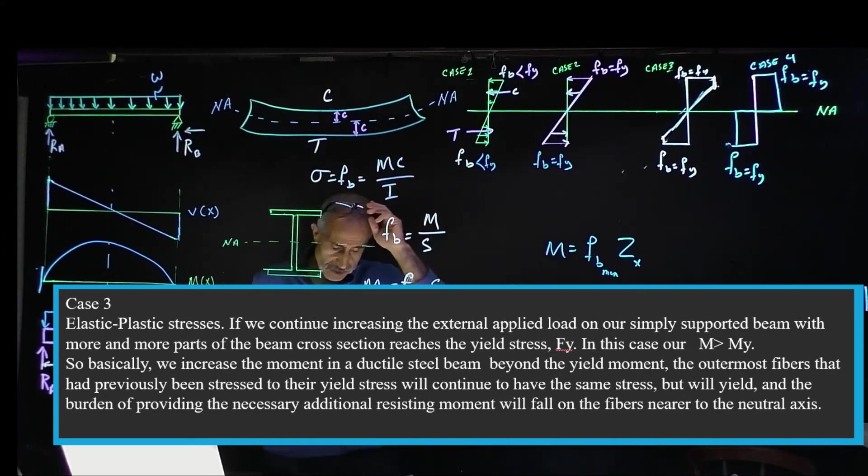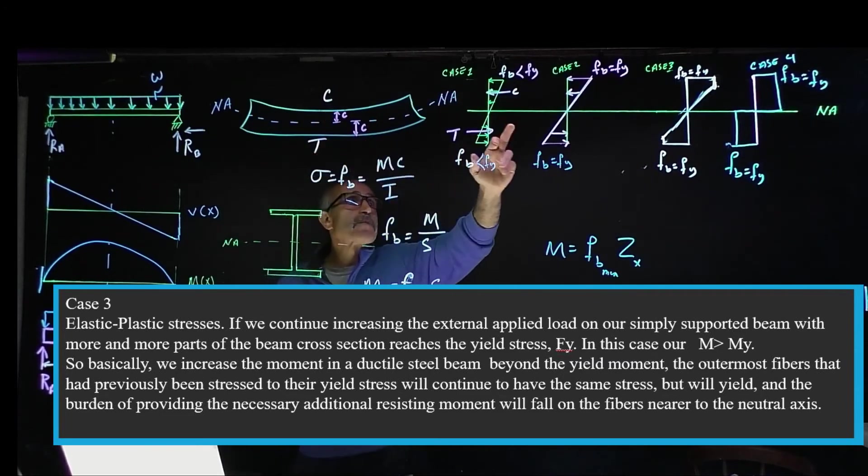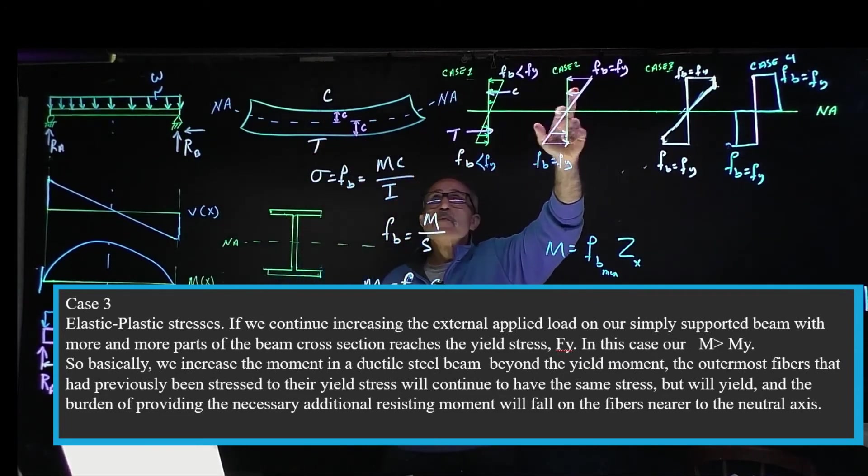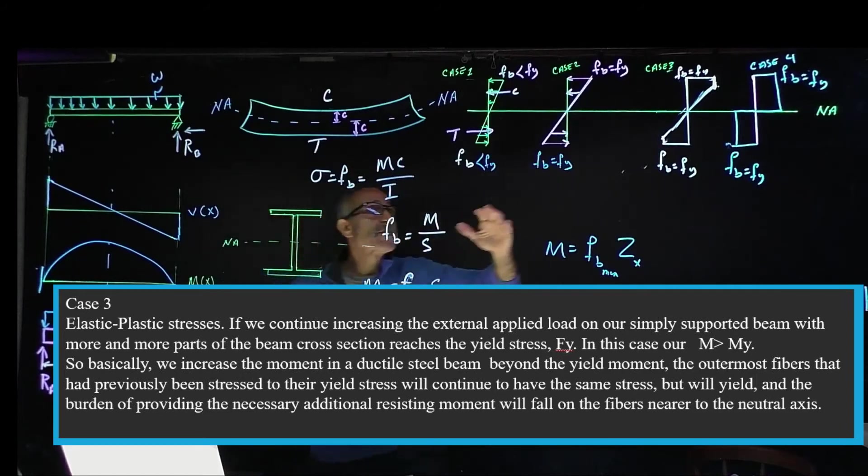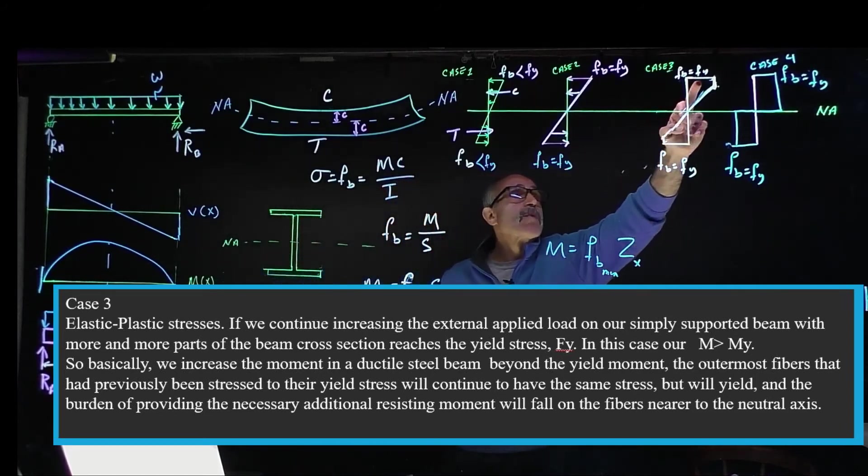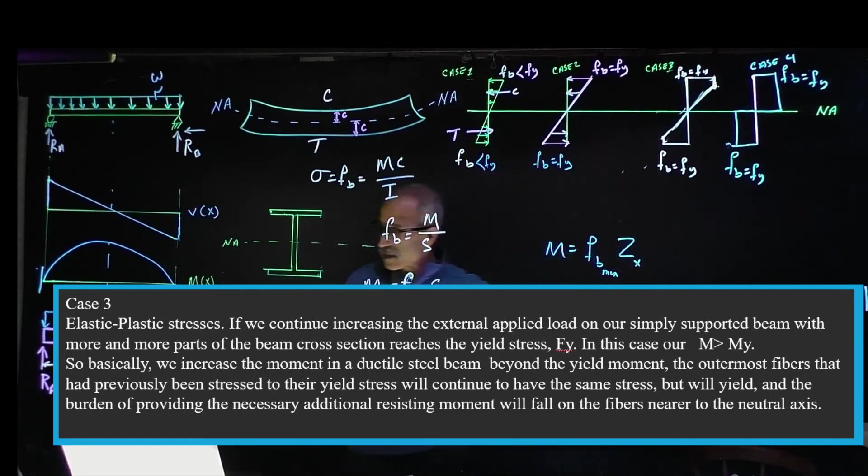As we continue, the rest of the beam which is not in yield stress starts taking some of the duty and they start to yield out. This will not become any more. What happens is the other fibers of the cross section are going to increase and take some of the burden, and that will continue.